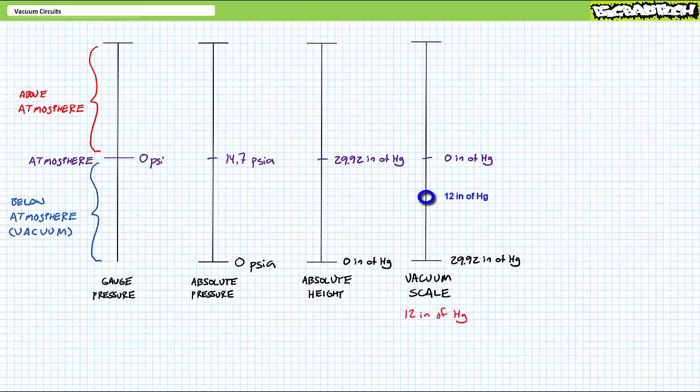Let's say we've got 12 inches of vacuum expressed using the vacuum scale. And we want to express the same value using the absolute scale. This takes a couple steps. Vacuum scale to absolute height scale, then absolute height scale to absolute pressure.